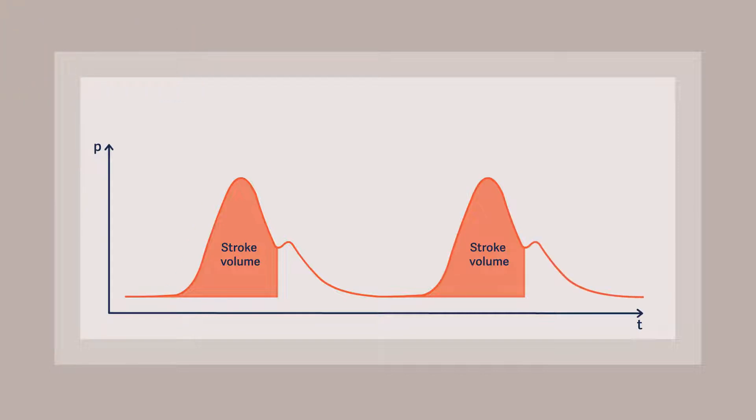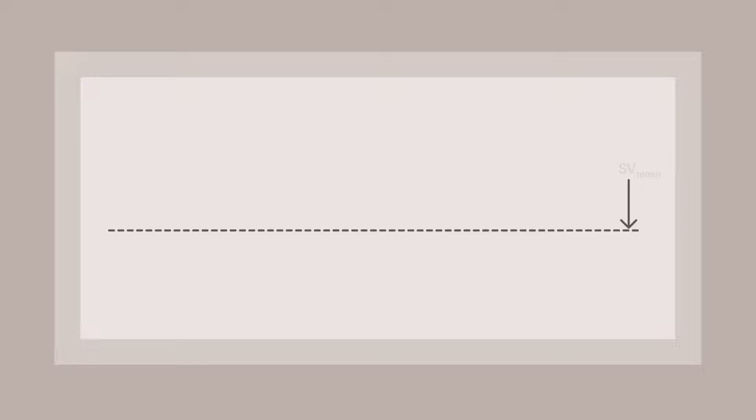By multiplying the stroke volume with the heart rate, a continuous beat-to-beat cardiac index or CI is determined.